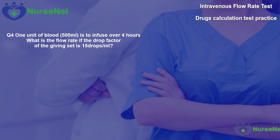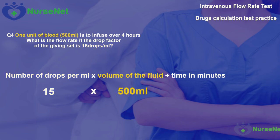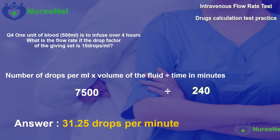Question 4. One unit of blood — 500 millilitres — is to infuse over 4 hours. What is the flow rate if the drop factor is 15 drops per millilitre? We use our drip rate formula: drops per millilitre multiplied by volume divided by time in minutes. 15 multiplied by 500 millilitres gives us 7,500. The time is 4 hours, so 4 multiplied by 60 gives us 240 minutes. Therefore, 7,500 divided by 240 gives us 31.25 drops per minute, which rounds down to 31 drops per minute.